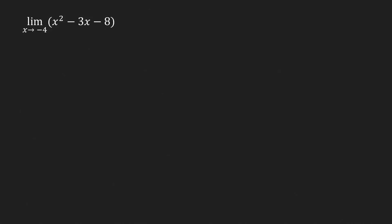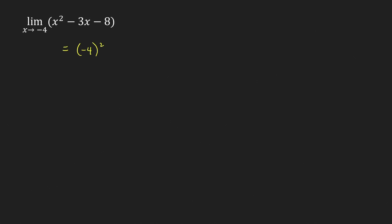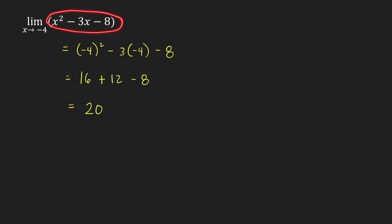The first problem: we want to find the limit of a polynomial as x approaches negative 4. Since this is a polynomial, we can do direct substitution. So the limit is just equal to negative 4 squared minus 3 times negative 4 minus 8, which equals 16 plus 12 minus 8, so that is 28 minus 8, equal to 20.